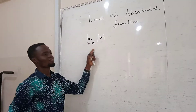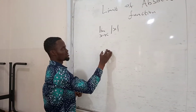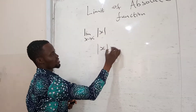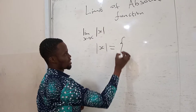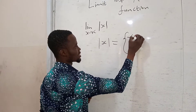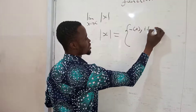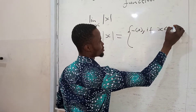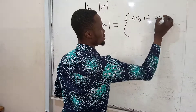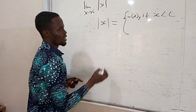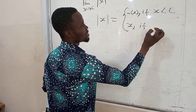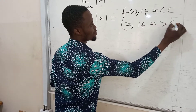So if you have something like this, you look at the absolute of x, which equals a function — that is negative x if x is less than c, where your limit is approaching. And the positive x if x is greater than c.